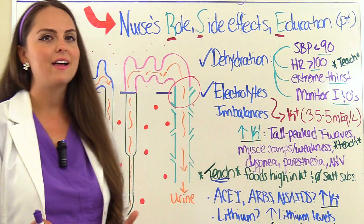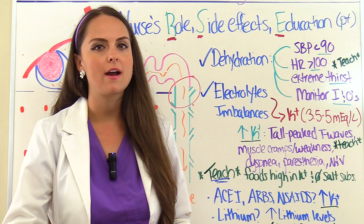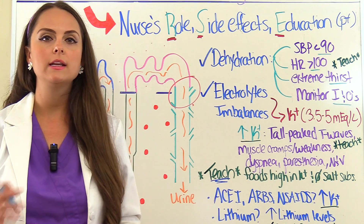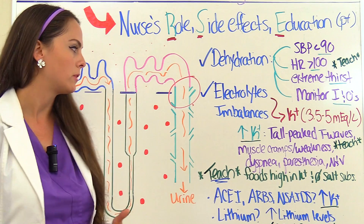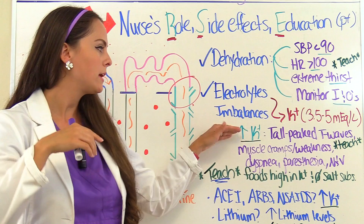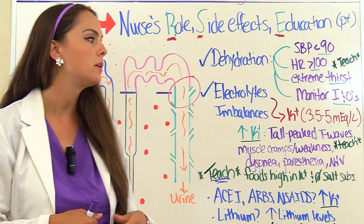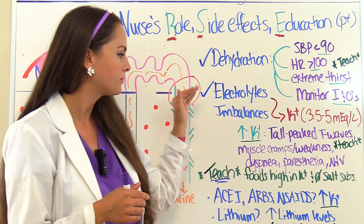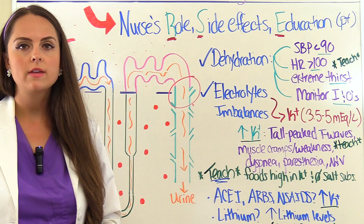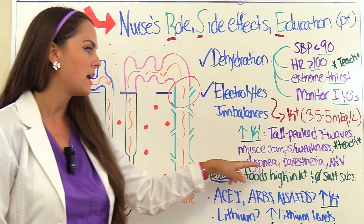Another thing to watch for is electrolyte imbalances — specifically hyperkalemia, because these medications spare potassium. The normal potassium level to remember is 3.5 to 5 milliequivalents per liter; anything greater than 5 is hyperkalemia territory. Signs and symptoms include tall peaked T waves on EKG — a big test question — as well as muscle cramps, muscle weakness, difficulty breathing, paresthesia with tingling and burning skin, nausea, and vomiting. Teach patients to recognize these signs and symptoms at home, even though they can't monitor EKG.